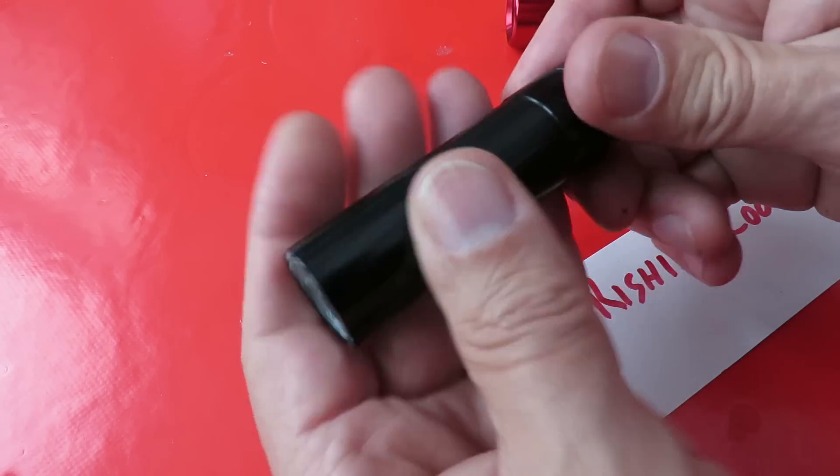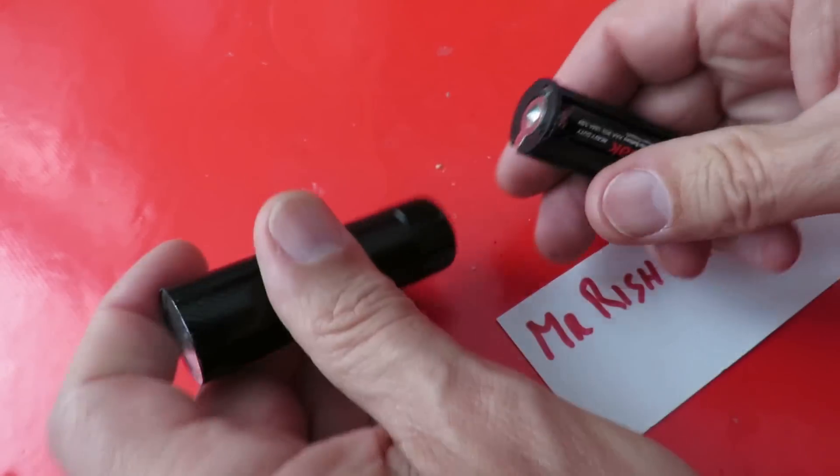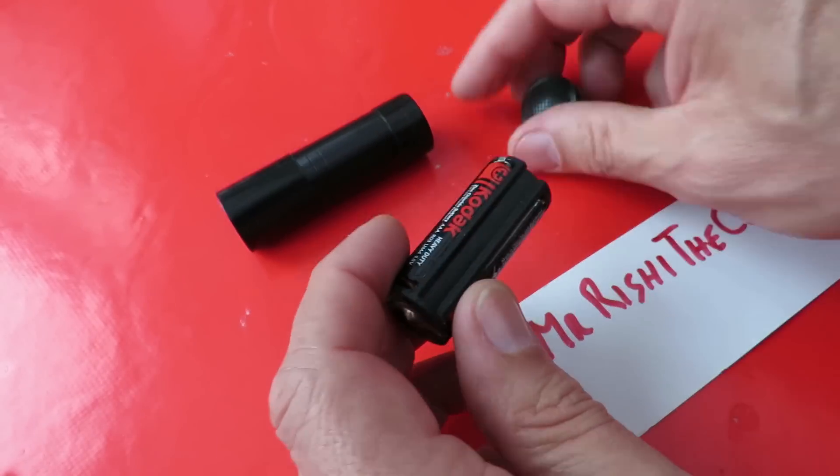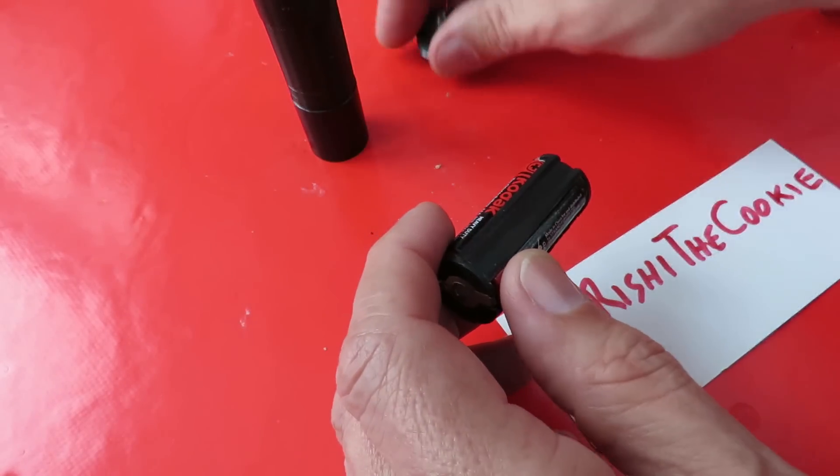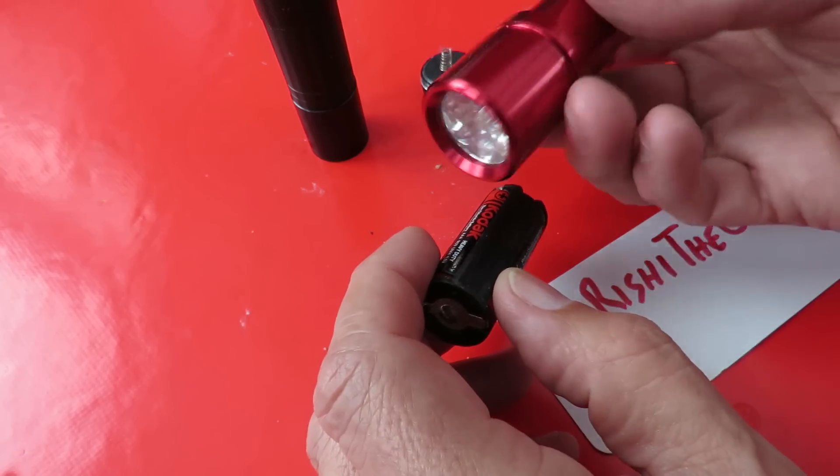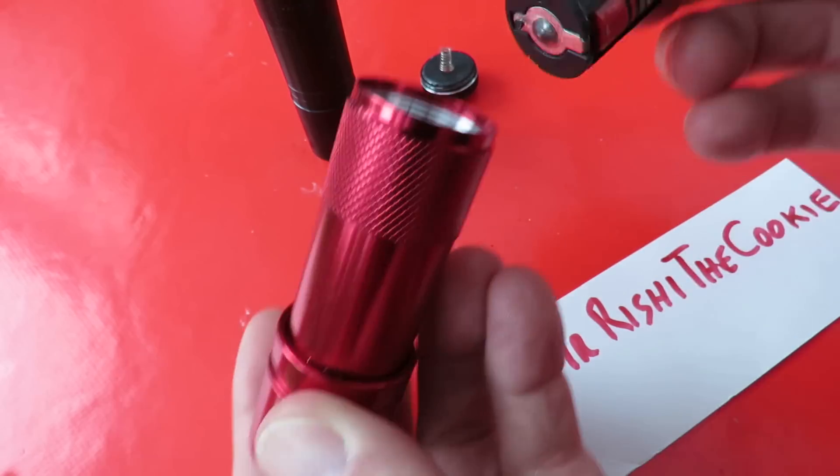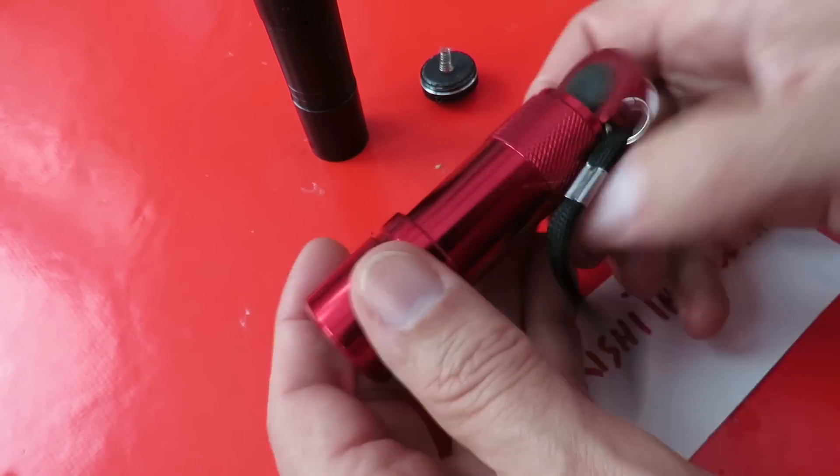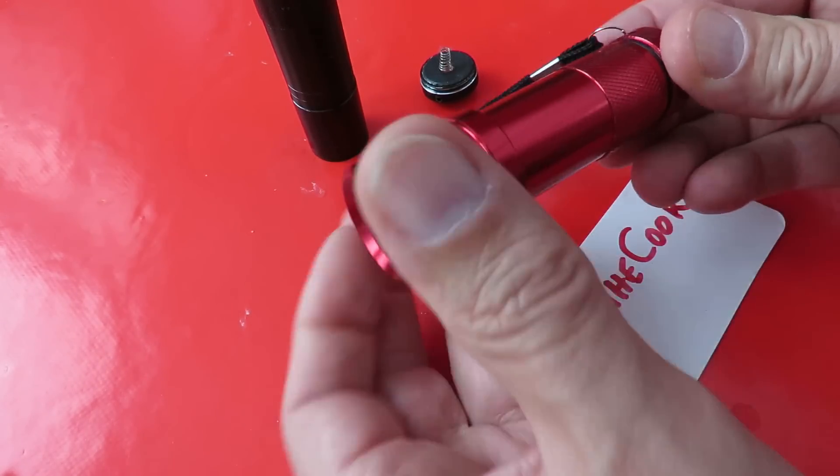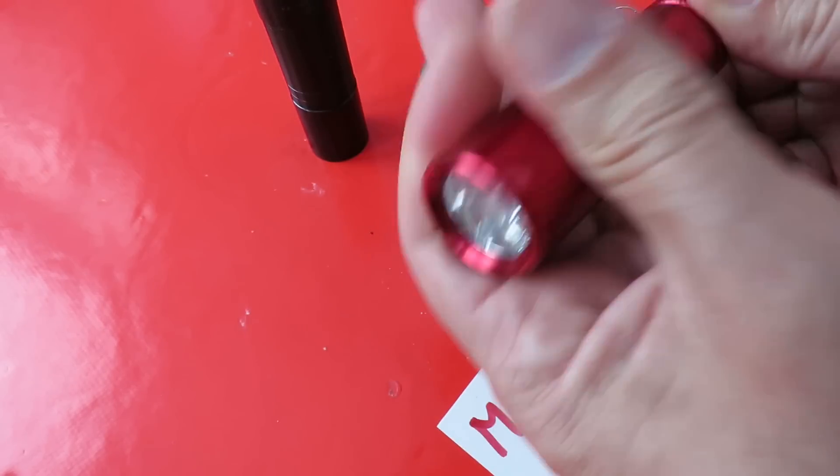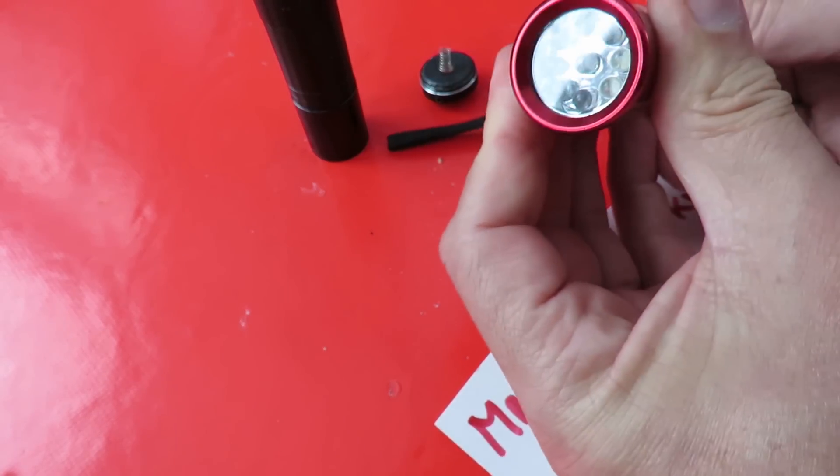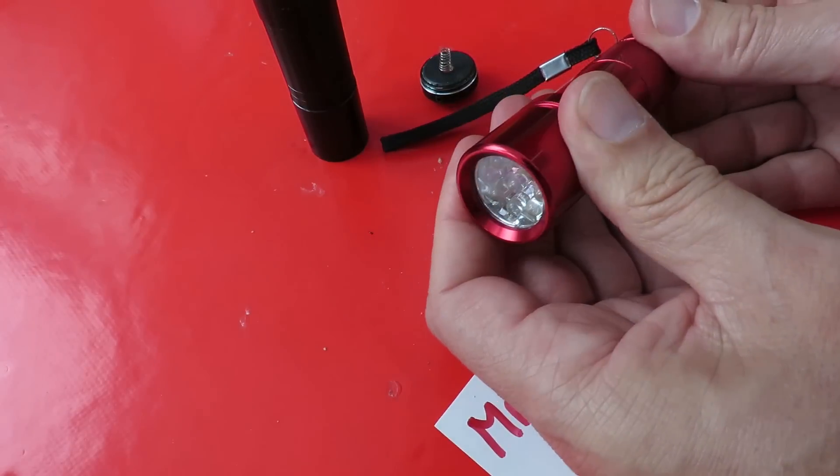So the fix was to pinch the battery container out of that torch. Nothing wrong with that torch but I just rather like this one because it looked better. I think they both came from Poundland. So stick that one in there, do it back up again, and there we go. Fixed.